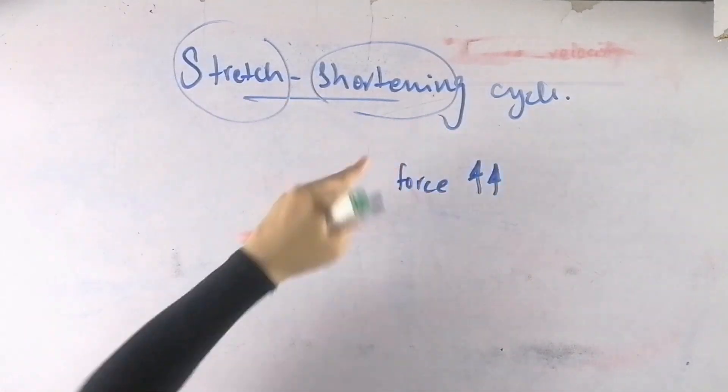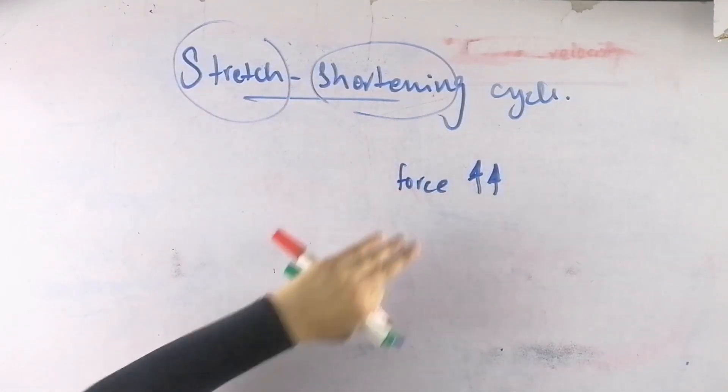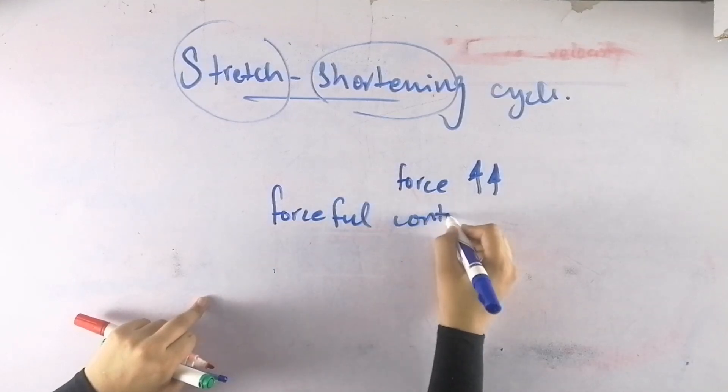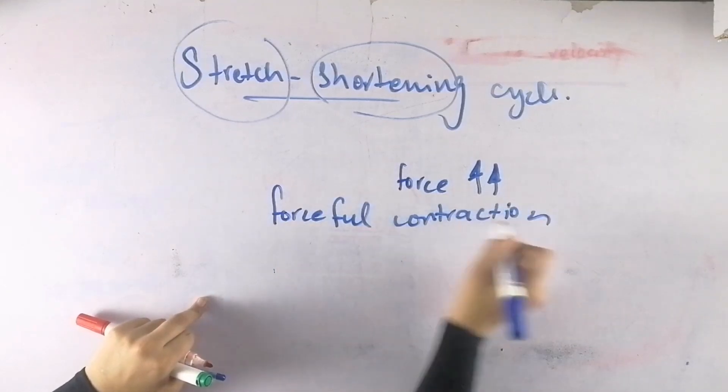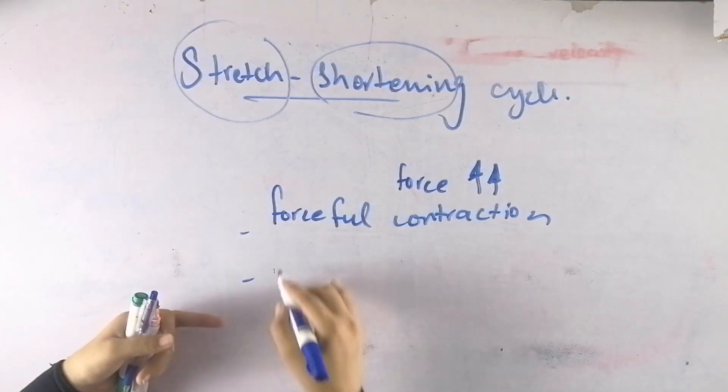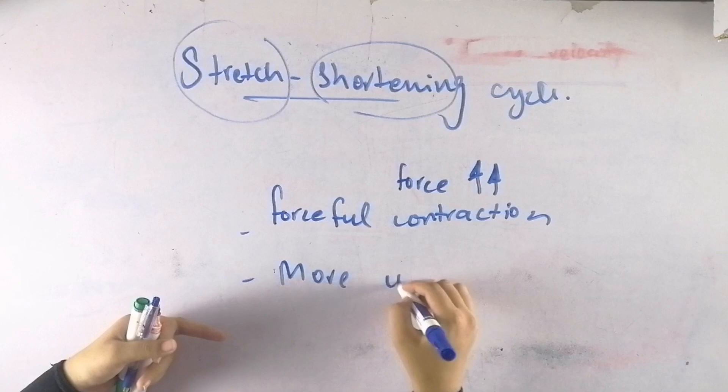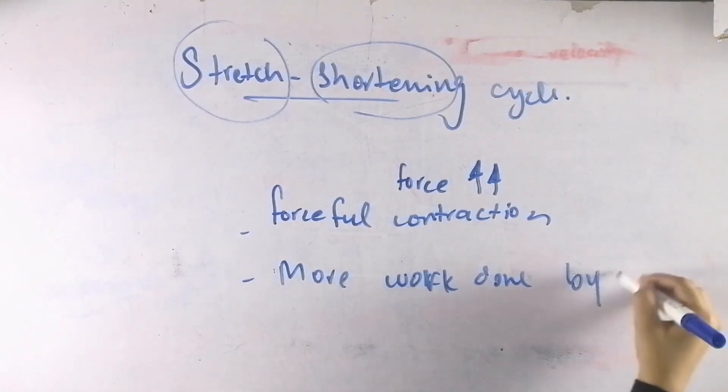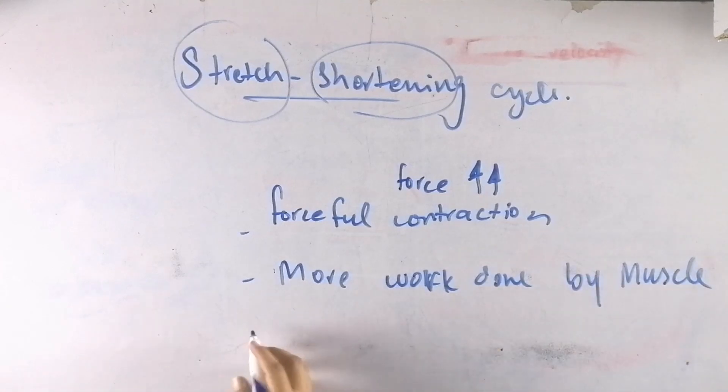The stretch-shortening cycle produces maximum force with forceful contraction. We have more work done by the muscles. More work is done easily by muscle, and the metabolic cost will be less.